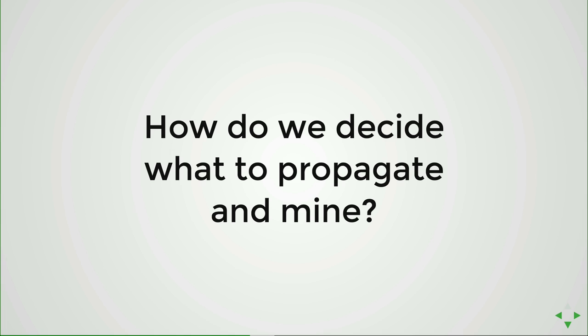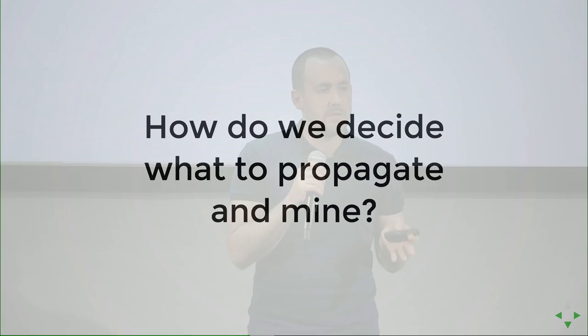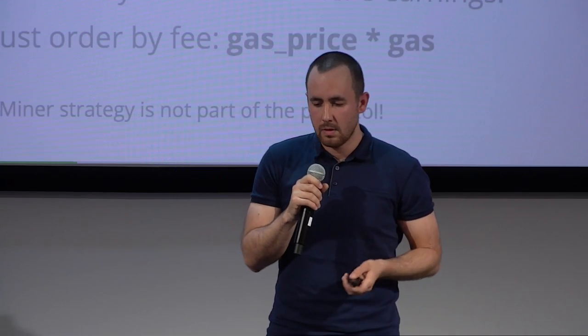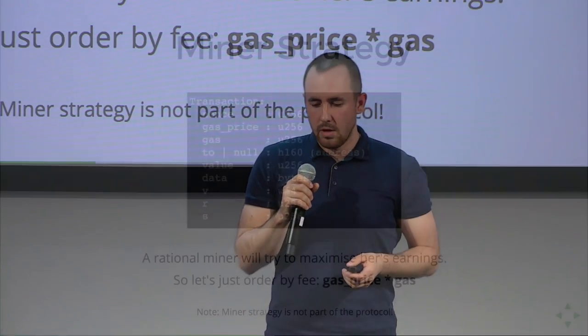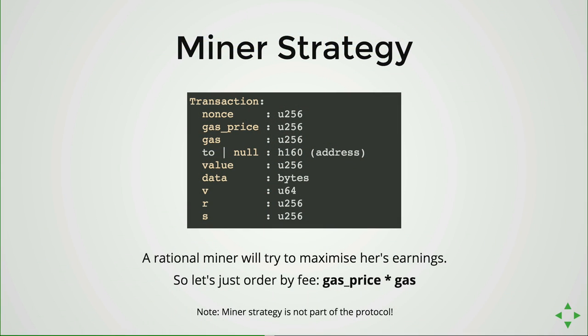Now, how do miners or regular nodes decide which transactions are worth propagating to other peers, and which transactions miners should mine? A rational miner will try to maximize earnings. He can mint empty blocks, but there are also transactions floating in the network, and including them can make more money. That's a rational decision.